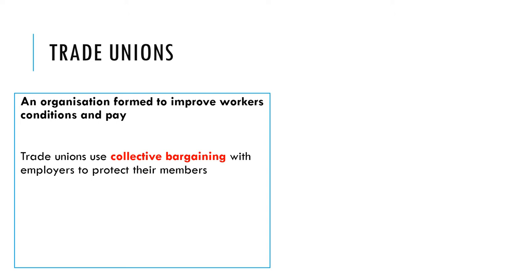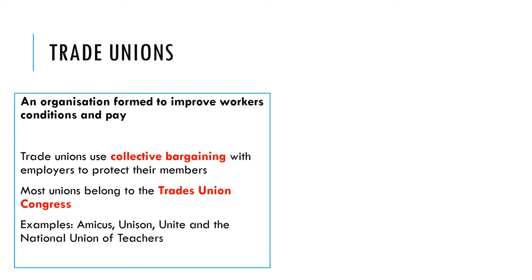So unions are bargaining for wages and conditions en masse rather than as individuals. The unions have an important role in setting pay and conditions rather than you individually in a pay negotiation with your employer. Some examples of unions include the National Union of Teachers.